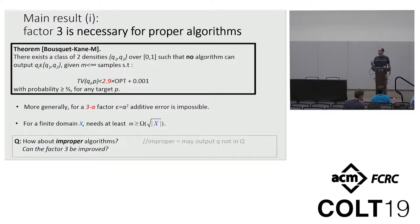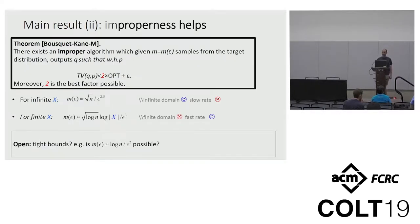A work by Acharya, Canonne, and Kamath showed that for this specific algorithm, three is indeed necessary. Our first main result is that not only for this algorithm, the factor three is necessary, but for any proper algorithm, any algorithm which outputs one of the QIs must exhibit a factor of three for some choice of target distribution. Now, how about improper algorithms? Does it help? Can we win this factor of three? And again, very maybe counterintuitively, the answer is yes. There exists an improper algorithm that achieves factor two. And moreover, two is information theoretically the best you can hope to achieve.